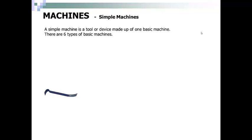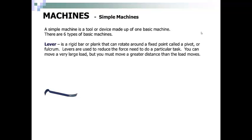A simple machine is a tool or device made up of one basic machine. There are six types of basic machines. The first type is a lever. A lever is a rigid bar or plank that can rotate around a fixed point called a pivot or fulcrum. Levers are used to reduce the force needed to do a particular task. You can move a very large load, but you must move a greater distance than the load moves.